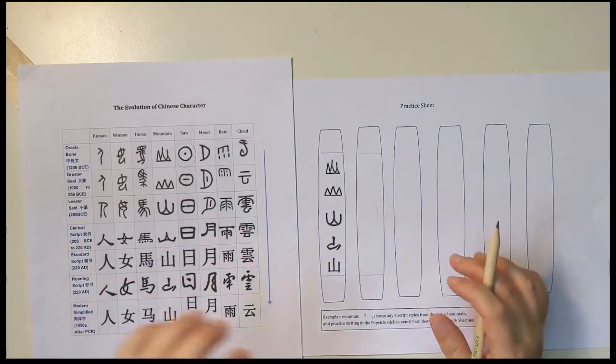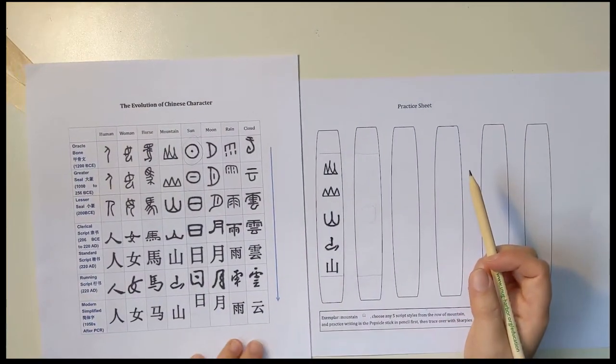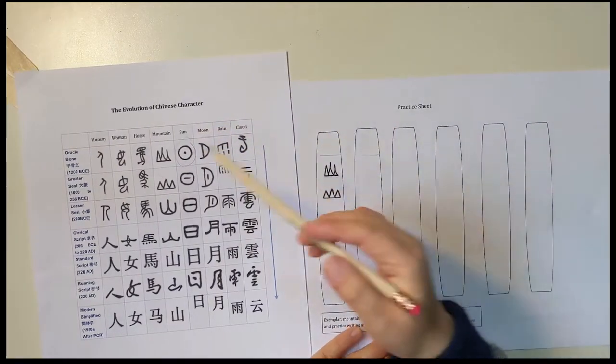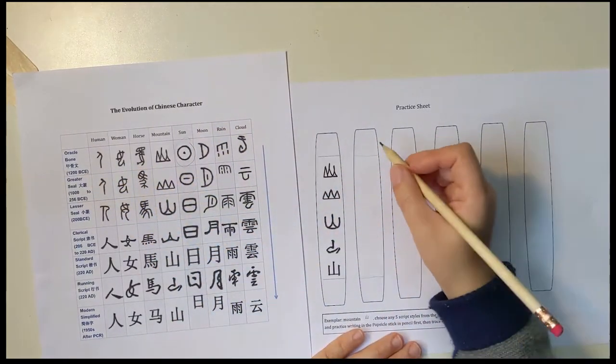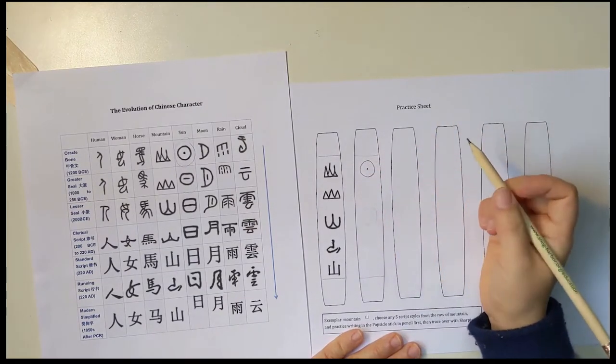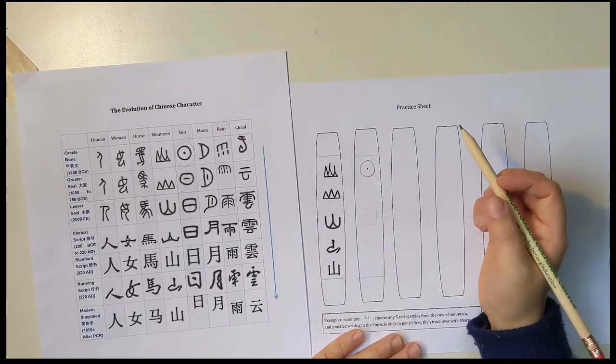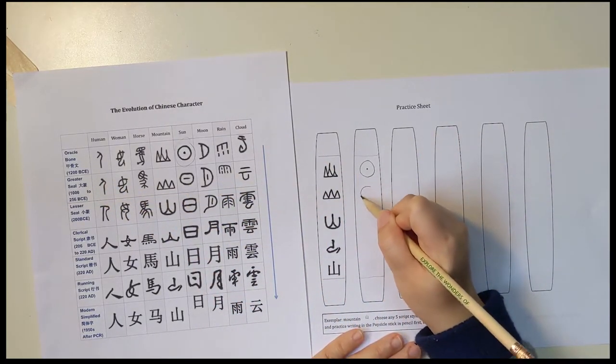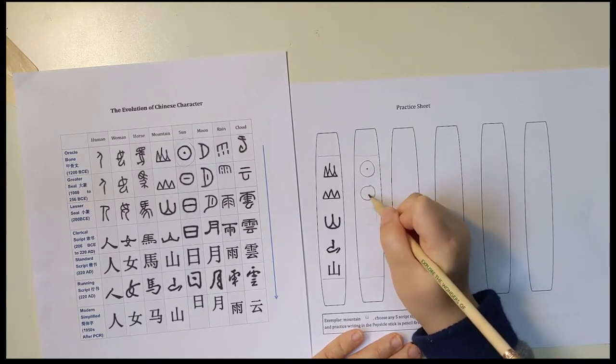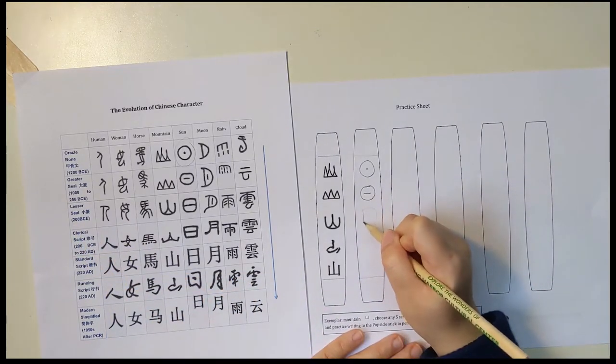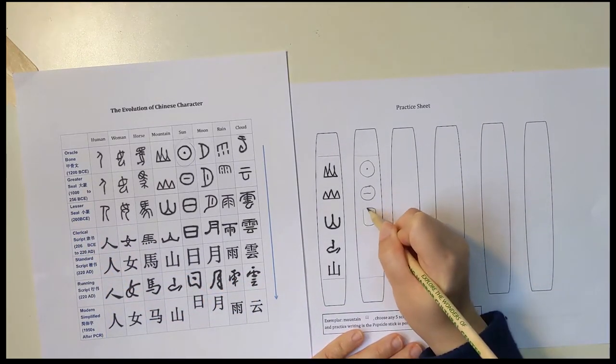As I mentioned, I chose the character of Sun, so I start with the oracle bone script, it's like a circle and a dot. And then I'm choosing the greater seal script, it's a circle and a dash in the middle, and then I'm writing the lesser seal script.